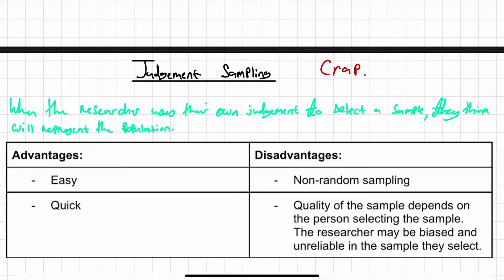That is not a good sample. Tom clearly has bad judgment. So advantages of a judgment sample is it's easy and it's quick. But disadvantages are that it's non-random, not everyone has an equal chance of being selected, and the quality of the sample depends on the person selecting the sample.